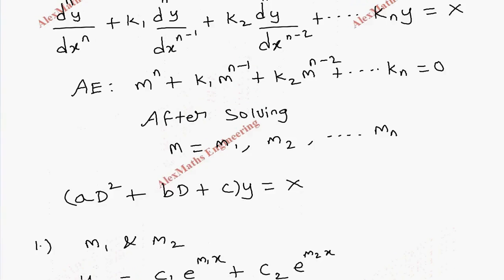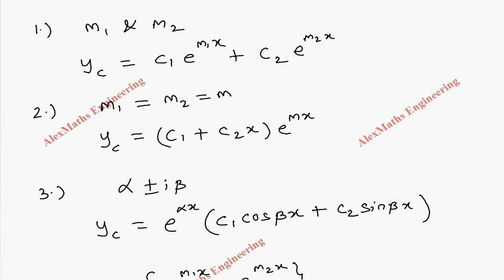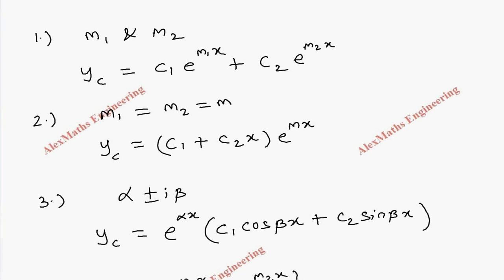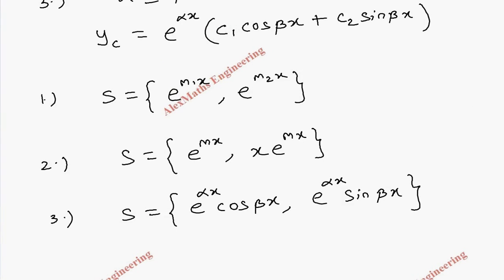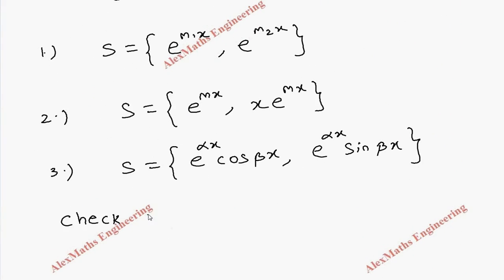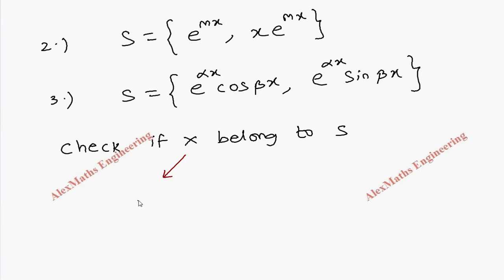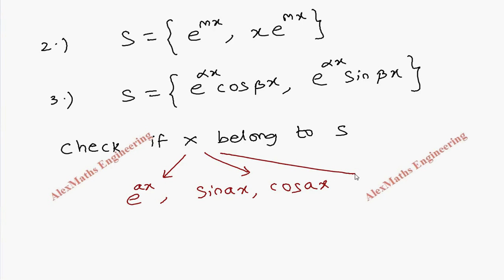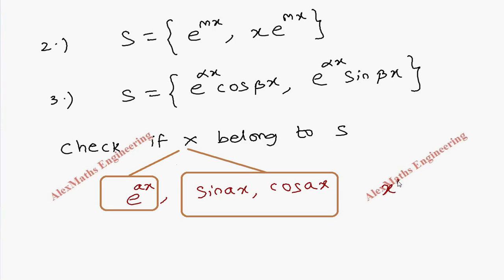So first, we write the auxiliary equation. After solving, we get values for m. Based on the values of m, we write the complementary function, then we write the solution set in each case. Now, we have to check the function given on the right-hand side — call it f(x) — and check whether it belongs to the solution set S or not. This f(x) may be an exponential function, a trigonometric function like sin x or cos x, or an algebraic function like x^n.